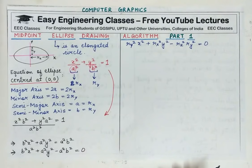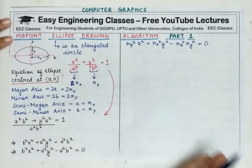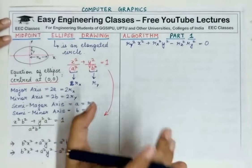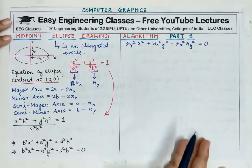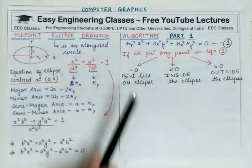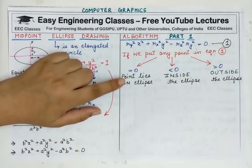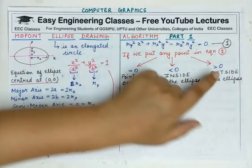Similarly, if we consider any point in the ellipse equation, we will also have three corresponding results: equal to 0, less than 0, and greater than 0. On that basis, we will define the next pixel. Since it is a midpoint ellipse drawing algorithm, we will proceed similarly to midpoint circle drawing algorithm — we will take a midpoint, keep it in the ellipse equation, and depending on what result comes, choose the next pixel to plot. If the result is 0, the midpoint lies on the ellipse boundary. If less than 0, the midpoint is inside the ellipse. If greater than 0, the midpoint is outside the ellipse.